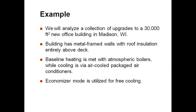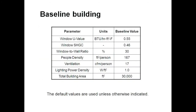For this example, we'll be analyzing a collection of upgrades for a 30,000 square foot new construction office building in Madison, Wisconsin. The building has metal framed walls and roof insulation above deck. Baseline values will be entered for heating via atmospheric boilers and cooling via an air-cooled packaged air conditioner. We will be using the economizer mode. The baseline building parameters are the defaults, unless indicated. So instead of the default values for window U-value, we are entering a code value of 0.55 BTUs per hour per foot squared per degree Fahrenheit.